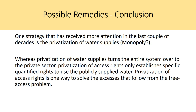One strategy receiving more attention is the privatization of water supplies. Privatization of the entire system turns it over to the private sector, while privatization of access rights establishes specific quantified rights to use publicly supplied water — one way to solve the excess that follows from free access. The author proposes transferring rights from state to private control, as private markets are significantly more efficient at pricing a resource than public systems where governments respond more slowly to changes and tend to be more short-term focused. Although a strong potential remedy, it is somewhat unrealistic as governments are unlikely to ever relinquish their rights to water.